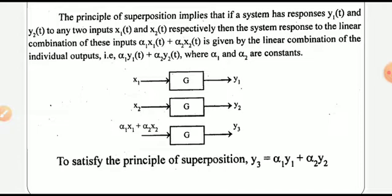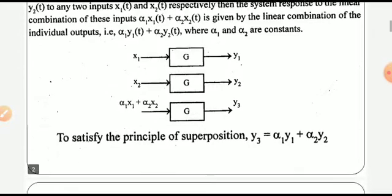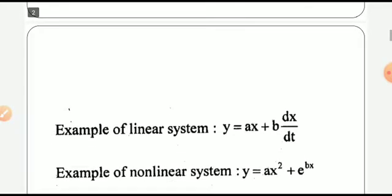Then we can say this system follows the principle of homogeneity. Similarly, if the input is the combination of the above inputs — that is alpha1·x1 plus alpha2·x2 — and the output has the form y3 = alpha1·y1 + alpha2·y2, then we can say the system obeys the principle of superposition. If both principles are obeyed, the system is linear; otherwise the system is nonlinear.